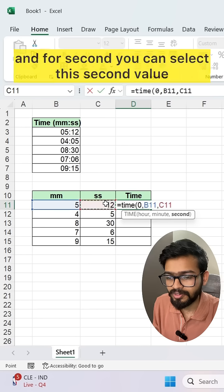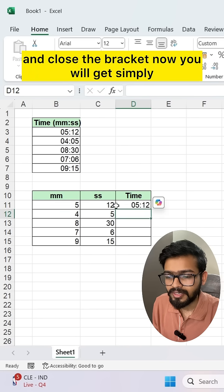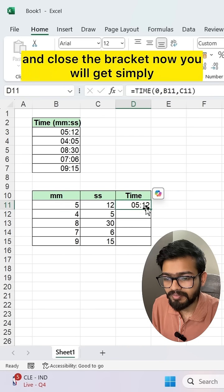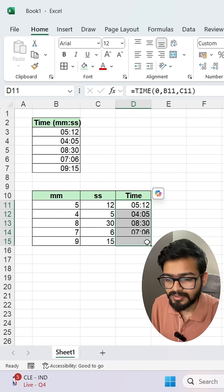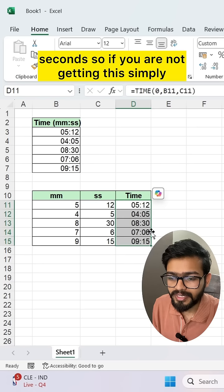And for second, you can select the second value and close the bracket. Now you will get simply this minute and seconds.